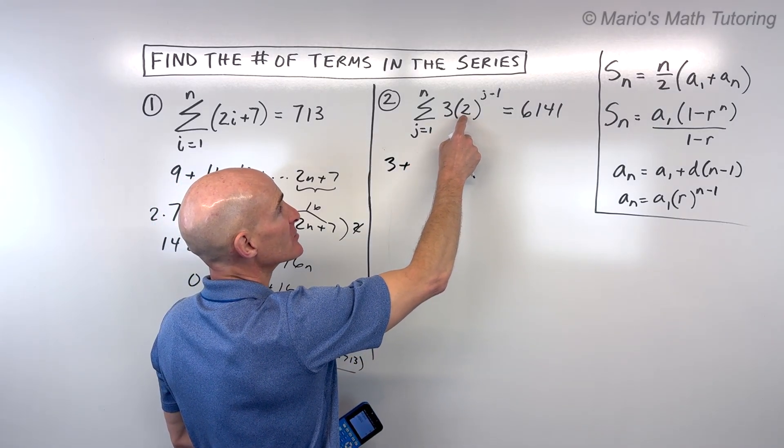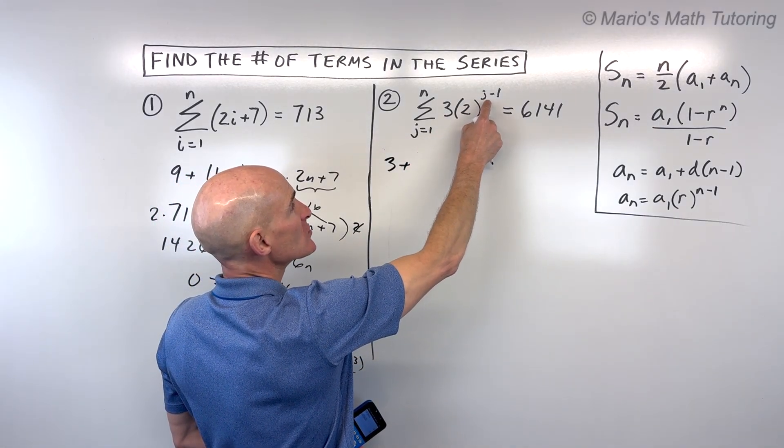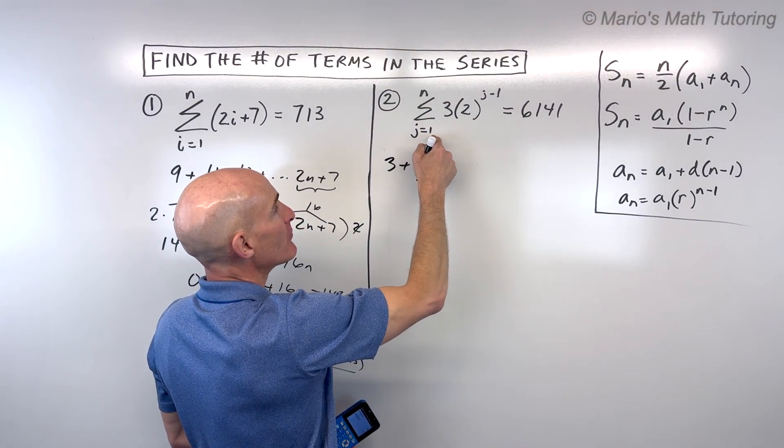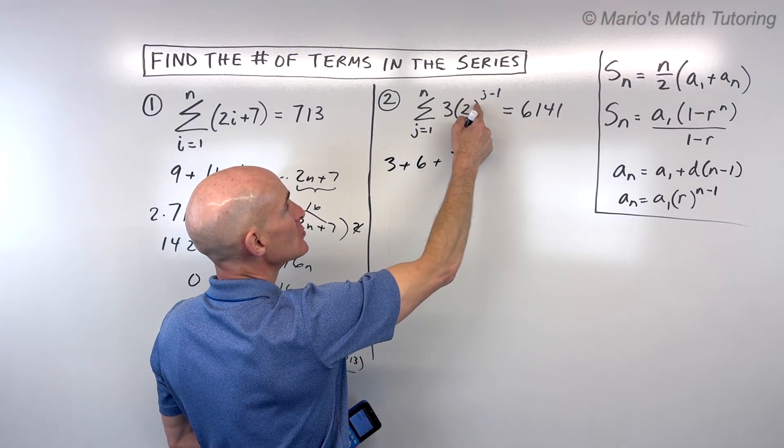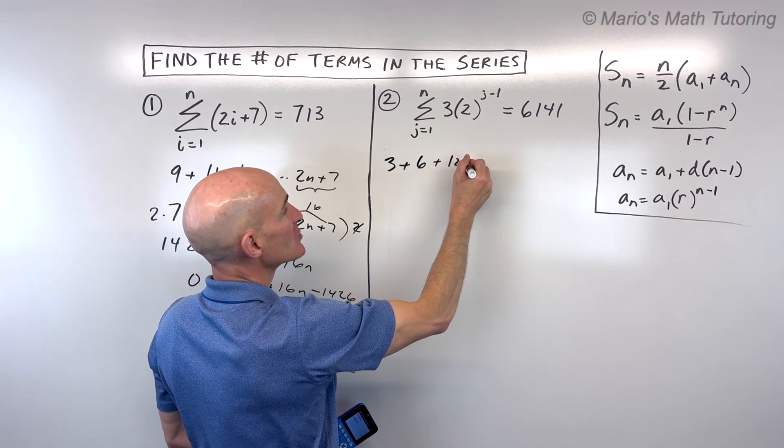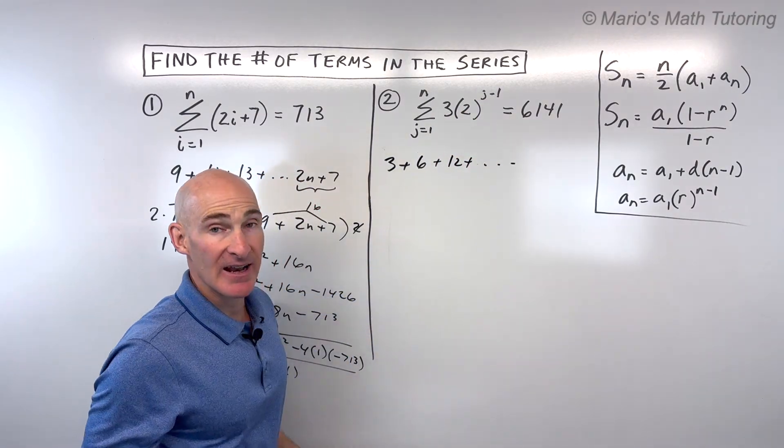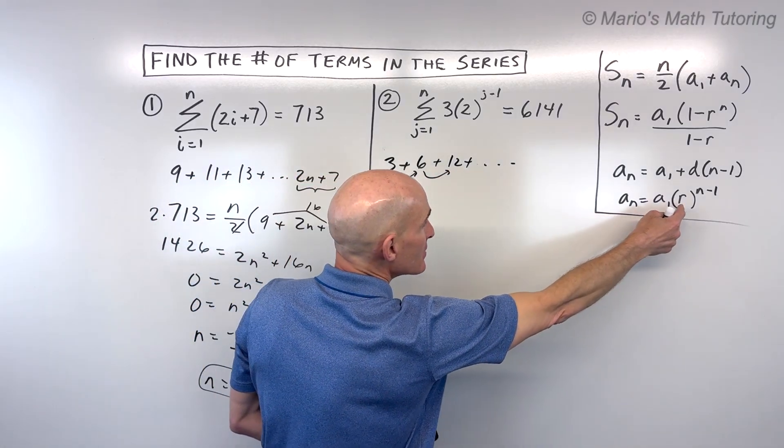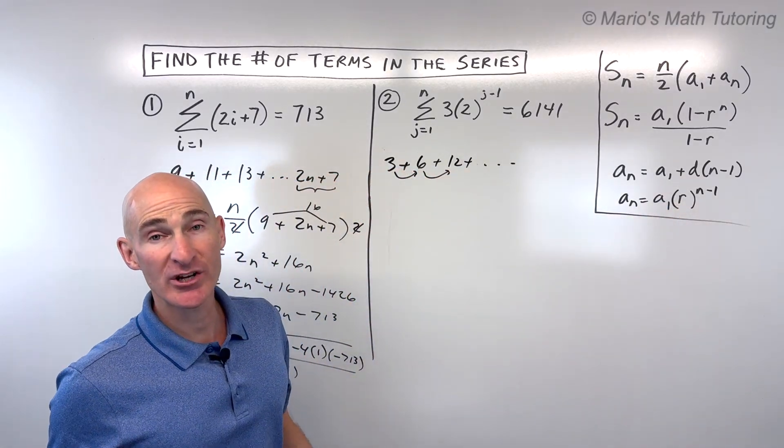We put 2 in, the next term, that's going to be 2 minus 1, which is 1, 2 to the 1st is 2, times 3 is 6. If I put 3 in, 3 minus 1 is 2, 2 squared is 4, times 3 is 12. But what you'll notice is we're multiplying by 2 each time. That's our r value or our geometric ratio.